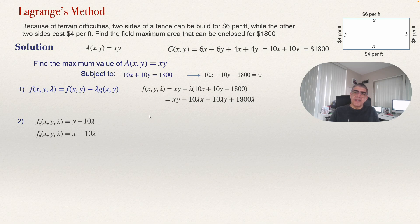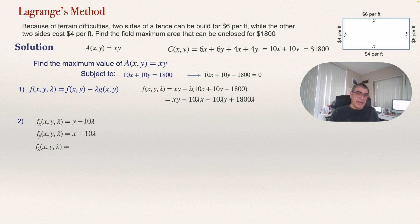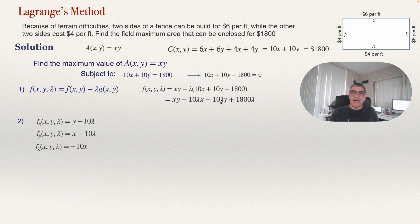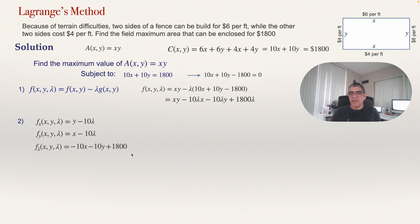Finally, the partial derivative with respect to lambda: XY has no lambda so its derivative is zero; minus 10 lambda X gives minus 10X; minus 10 lambda Y gives minus 10Y; and 1800 lambda gives plus 1800. So the partial derivative with respect to lambda is minus 10X minus 10Y plus 1800.